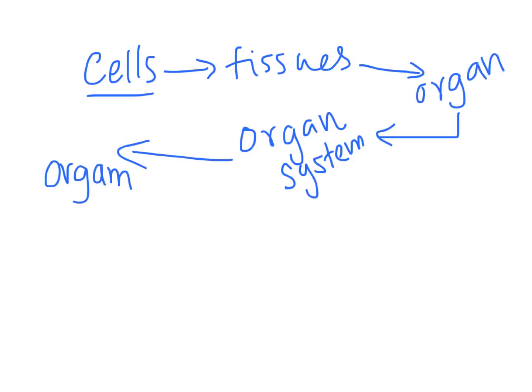Organism is a term used to describe any living thing. So cells build up tissues; different types of tissues doing a similar job build an organ; different organs combined together performing a common job form an organ system; and then a collection of organ systems makes an organism, which is a living thing.